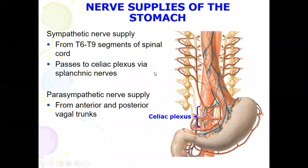The nerve supply of the stomach: it is supplied by the sympathetic nerve supply from the T6 to T9 segment of the spinal cord. This sympathetic nerve passes through the celiac plexus via the splanchnic nerve. The parasympathetic nerve supply comes from the anterior and posterior vagal trunks.